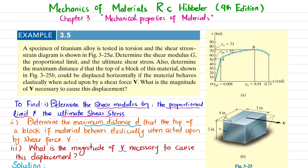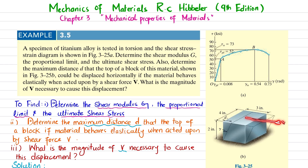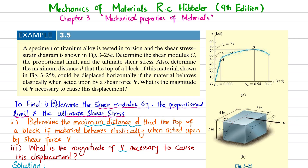This is the shear stress and shear strain diagram for the titanium alloy under torsion. We have to find the shear modulus G, the proportional limit, and the ultimate shear stress. In part b, you can see this block where a shear force is applied at the surface. We have to determine the displacement d that this block will move due to this shear force, and also find the magnitude of V necessary to cause this displacement.